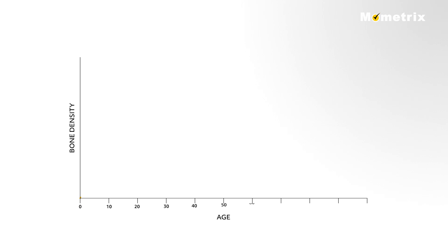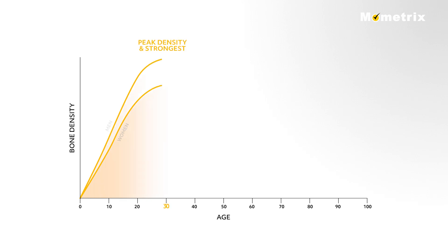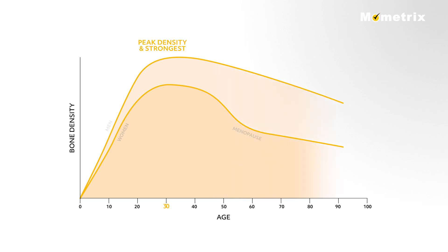During the young adult years, more bone is formed than is broken down, causing the bones to increase in density until about age 30, when they are at their peak density and their strongest. After that, bones slowly decrease in density as there is more breakdown than formation.